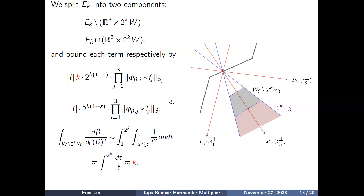This is the key estimate in our analysis. Without it we cannot achieve sharp regularity s. Without splitting into two cases, the best we could obtain was s > 3/2, not s > 1. With this splitting, we achieve the sharp threshold s > 1.